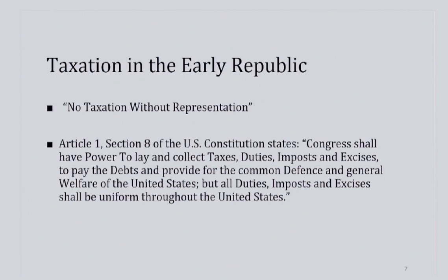Colonial Americans vehemently protested against taxation by the British, since they had no direct representative in Parliament. This complaint was a significant contributor to the Revolutionary War, and imposing taxes without consent was one of the grievances against King George III listed in the Declaration of Independence. The Articles of Confederation, the United States' first go at a Constitution, did not give the federal government any taxing power, and this is one of the many reasons why the Articles did not pan out for the young country.